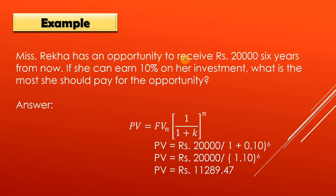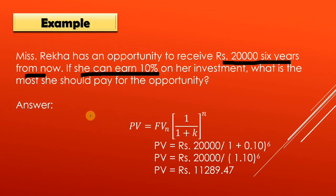Ms. Rekha has an opportunity to receive Rs. 20,000 six years from now. If she can earn 10% on her investment, what is the most she should pay for the opportunity? Here the future value is known, but you want to find the present value — what should she invest today to receive Rs. 20,000 after 6 years at 10%? By using the formula, the present value calculates to Rs. 11,289.47.